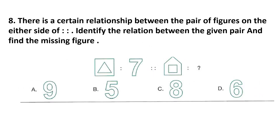Question number 8. There is a certain relationship between the pair of figures on either side of the colon. Identify the relation and find the missing figure. In the first picture there are 7 lines and the number is 7. In picture 2 there are 9 lines — 5 plus 4 equals 9. So the answer is option A — 9.